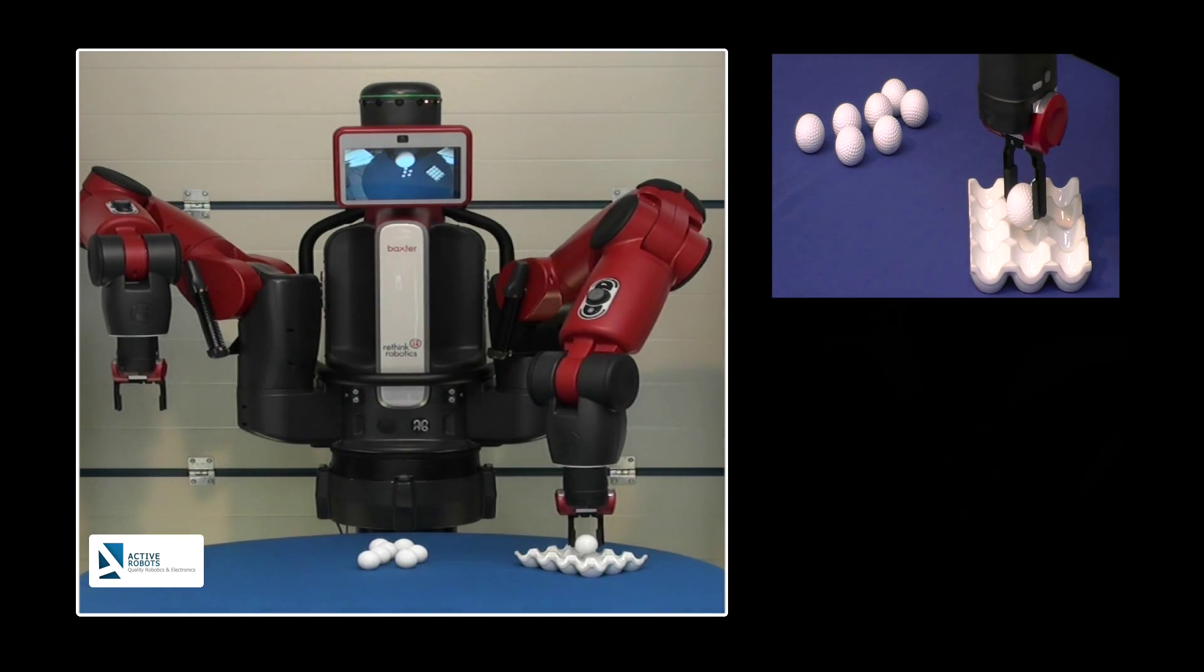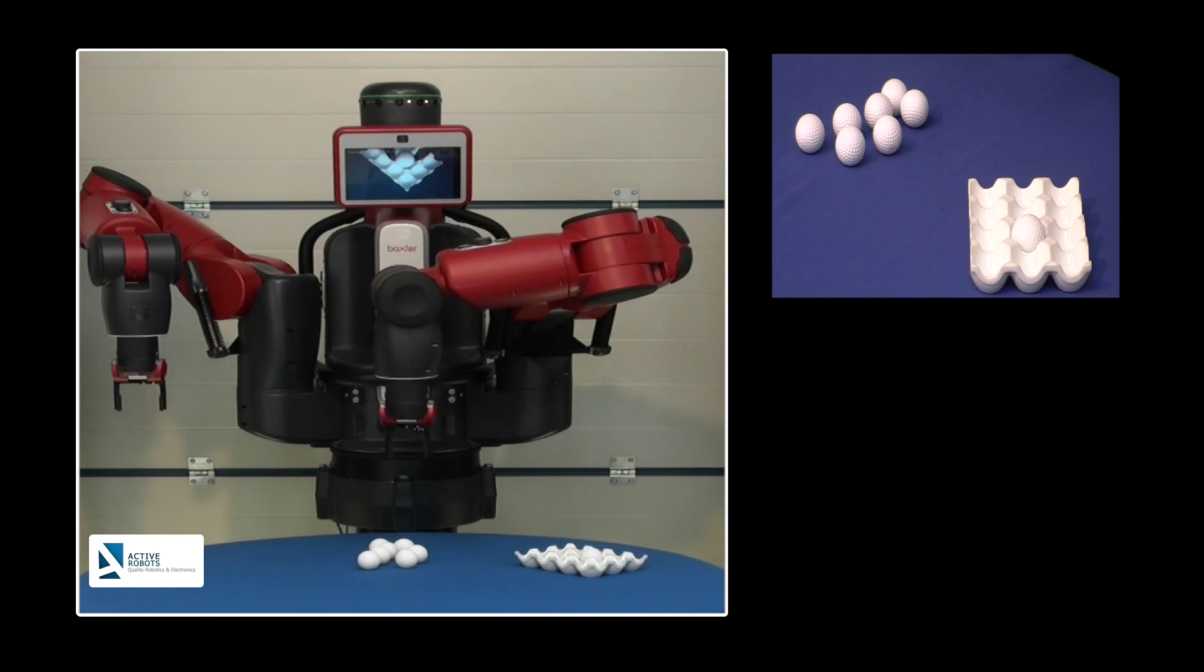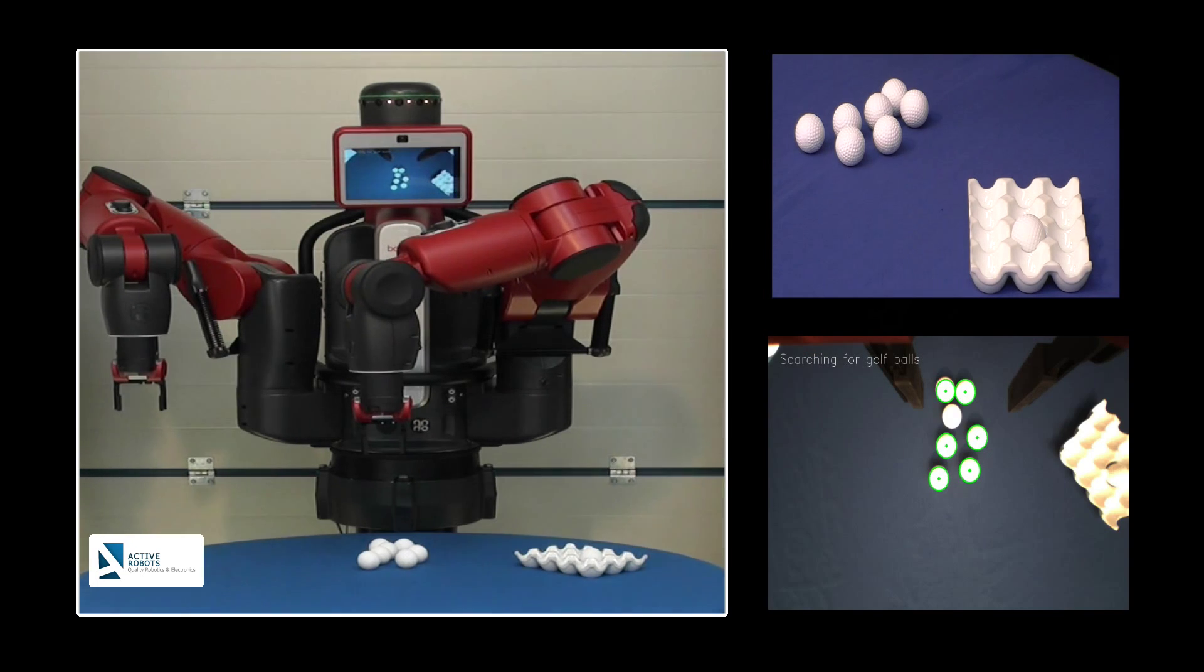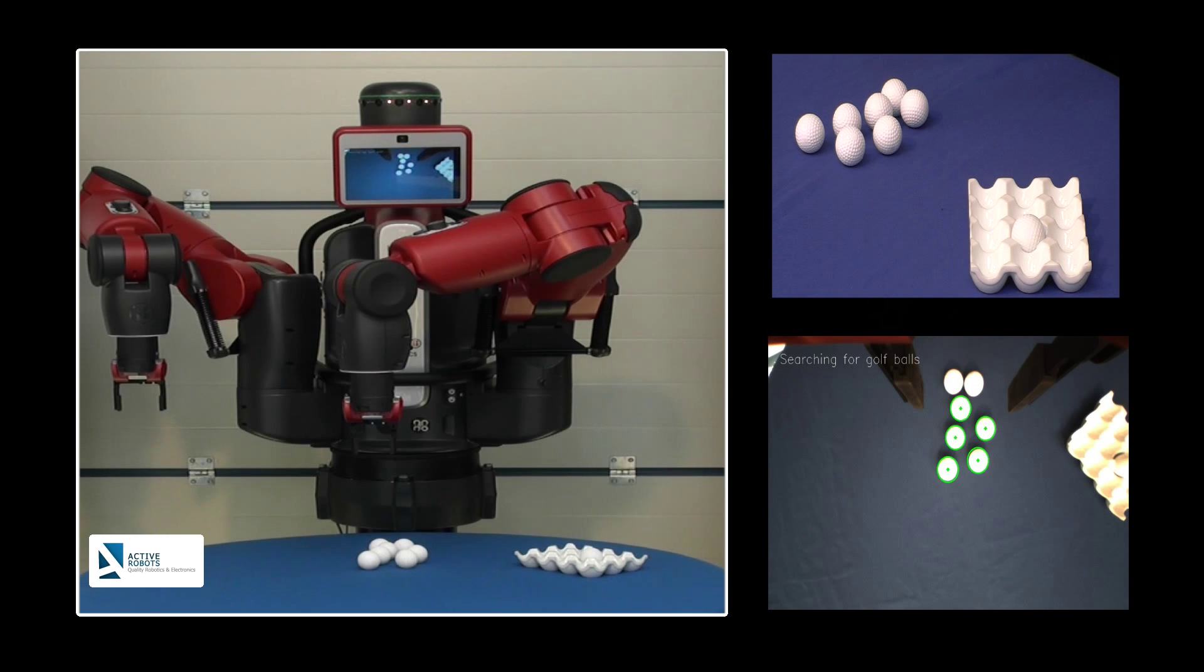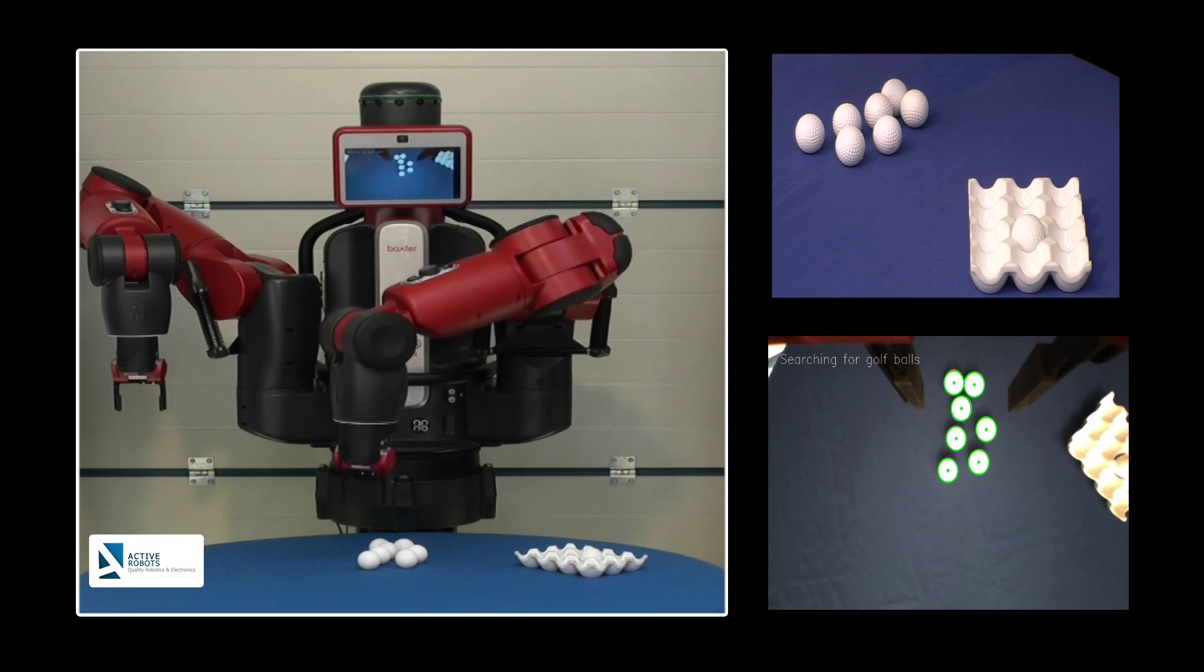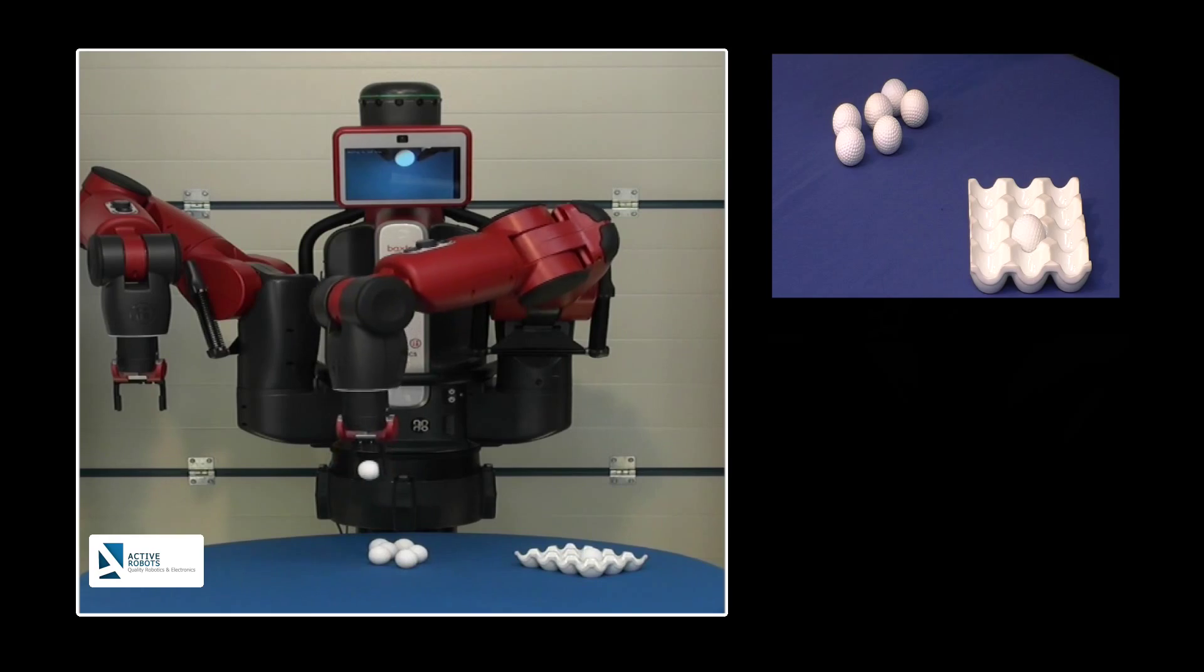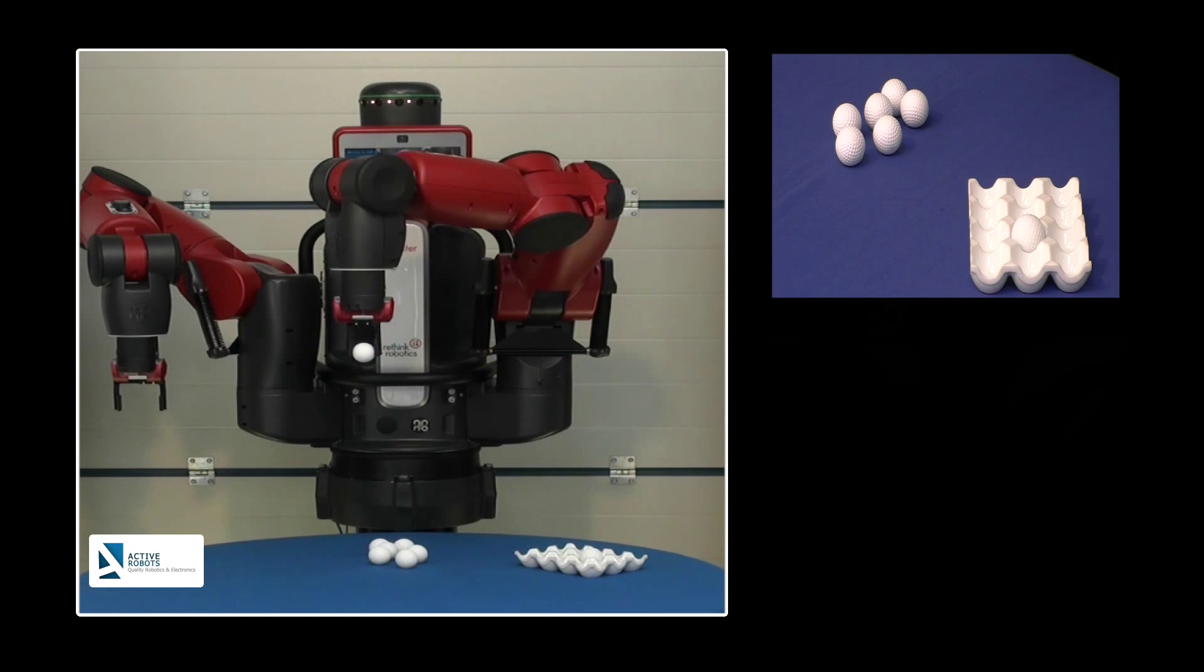Dropping it in the egg tray, now looking for the next ball. Same procedures as before: finding the ball that's furthest from the egg tray, rotating the grippers for the best angle to pick it up, picks it up, moves it across to the egg tray.